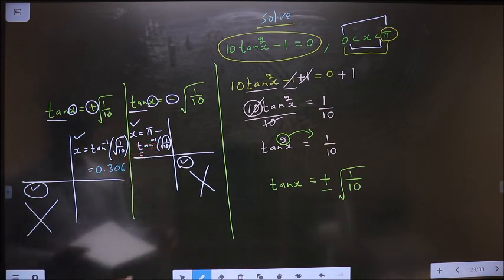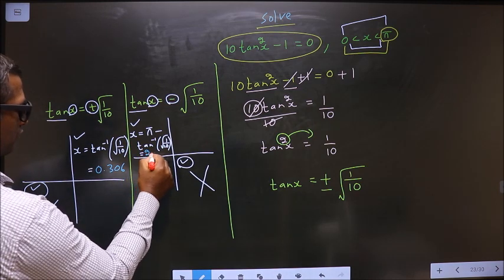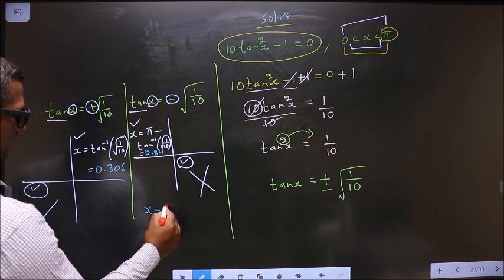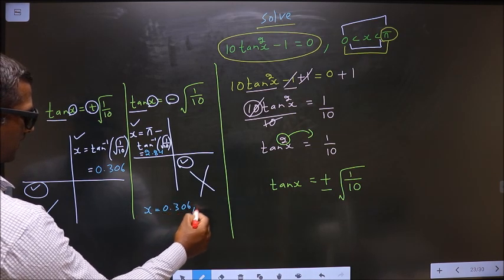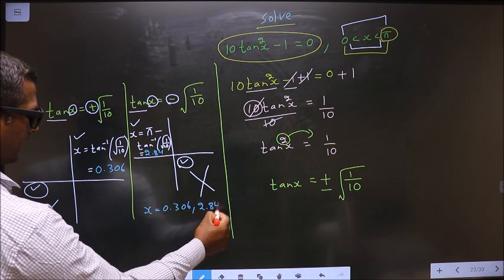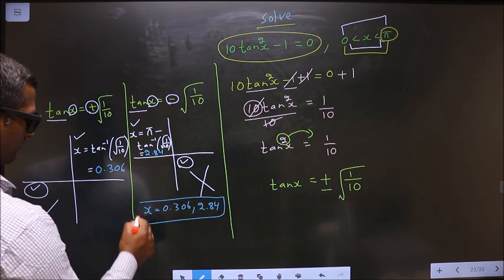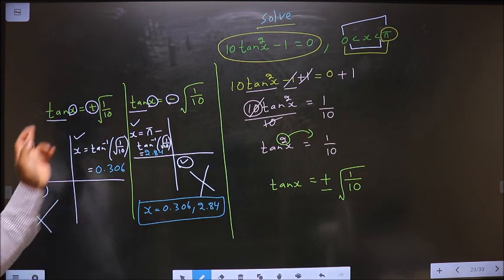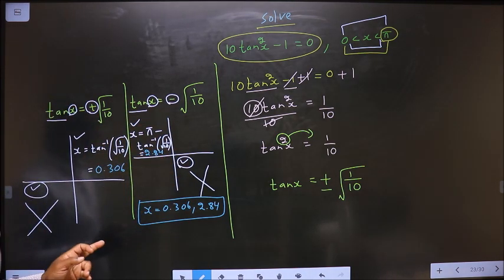Put this in the calculator. You should get 2.84. So finally, x values are 0.306 and 2.84. This is our answer. Am I clear?